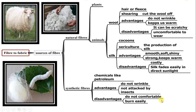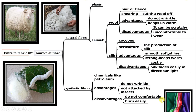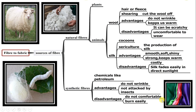Disadvantages: we do not feel comfortable wearing synthetic fabrics in summer because they do not absorb sweat. They also burn easily, so we should not wear them while working near a fire. Examples of synthetic fibers are nylon and polyester.